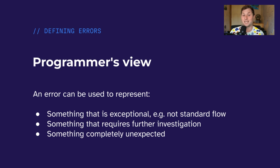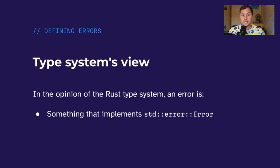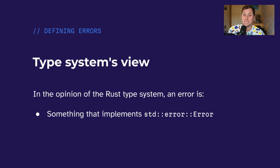There's also the notion that an error might be something completely unexpected — a state the program encounters that was completely unanticipated, where the typical outcome is that the whole program crashes. In Rust's world, this is called panicking. The type system, however, has a much simpler view: Rust's type system just treats errors as values. They are not special in any way.